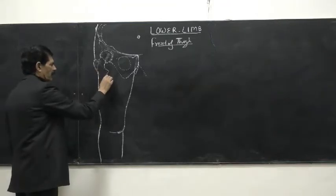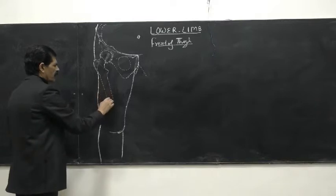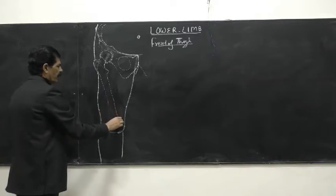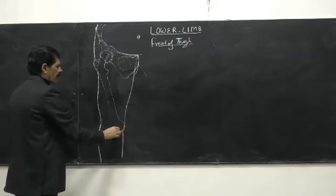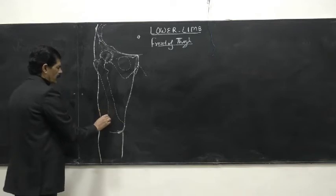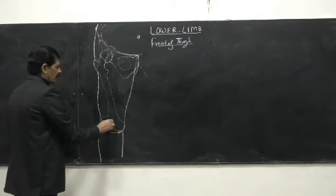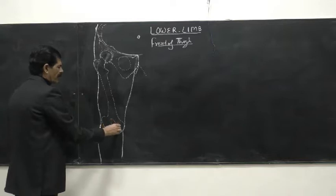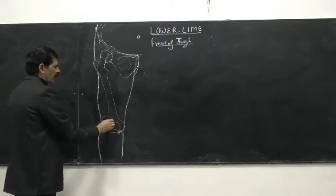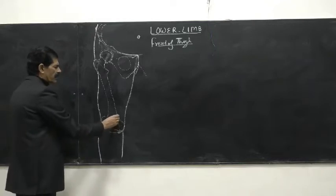The shaft of the femur starts with the medial border and lateral border — so it is prism-like, with three borders: medial, lateral, and posterior. The medial border continues downward and expands into the medial condyle. The lateral border of the femur continues laterally as the lateral condyle. In between the two condyles there is a smooth area for the kneecap or the patella, which has a large lateral area and small medial part. Just above the medial condyle there is a small elevation called the adductor tubercle.